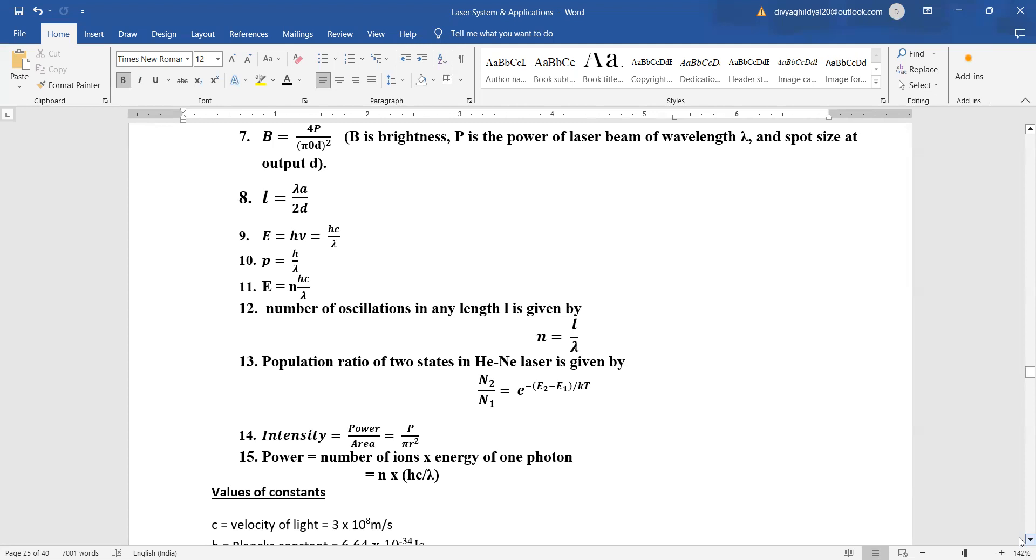Number of oscillations in any length l is given by n equal to l upon lambda. Population ratio of two states in helium-neon laser is n2 upon n1 equal to e to the power of minus e2 minus e1 upon kt.